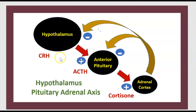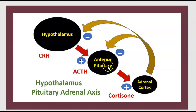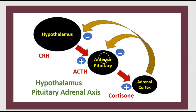The hypothalamus sends a stimulus by CRH to the anterior pituitary. A second stimulus goes from the anterior pituitary to the adrenal cortex by ACTH. There is a negative feedback from the adrenal cortex to the anterior pituitary by cortisol, and a second negative feedback to the hypothalamus by cortisol as well.